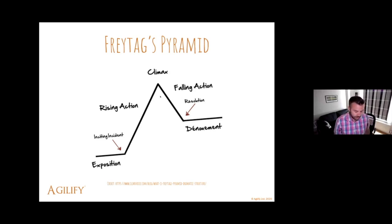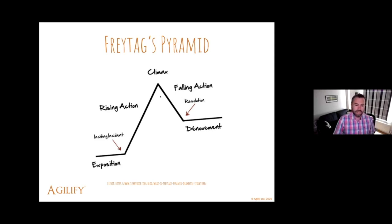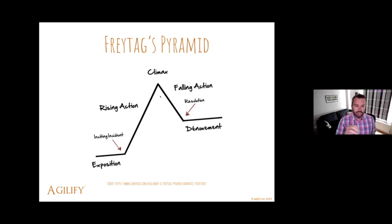This is interesting because improvisers use these dramatic arcs all the time. Actors use them. Hollywood filmmakers use them pretty much exclusively. So this is a great way to create connection between an audience and a story, and I believe that agile coaches and practitioners can really benefit from trying to include more of this story structure into their work.